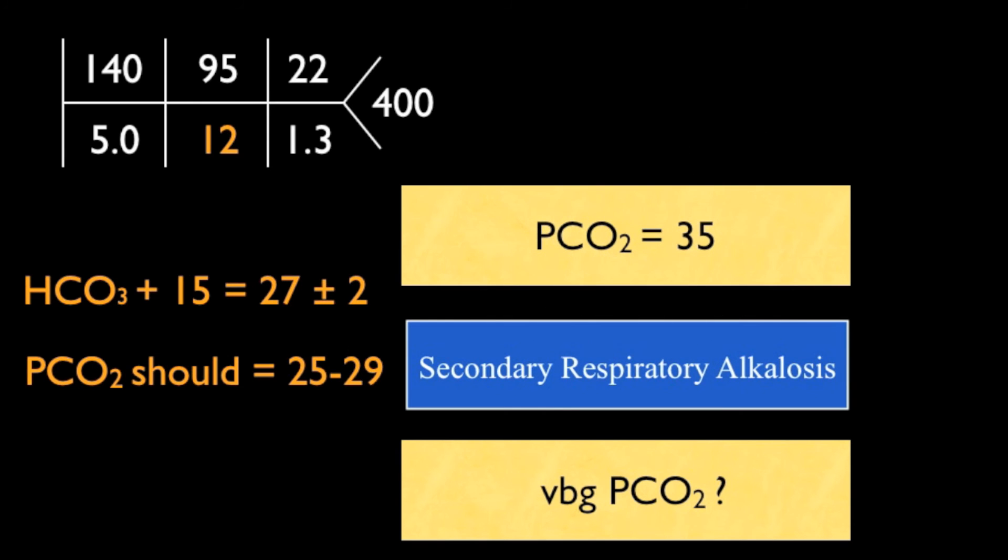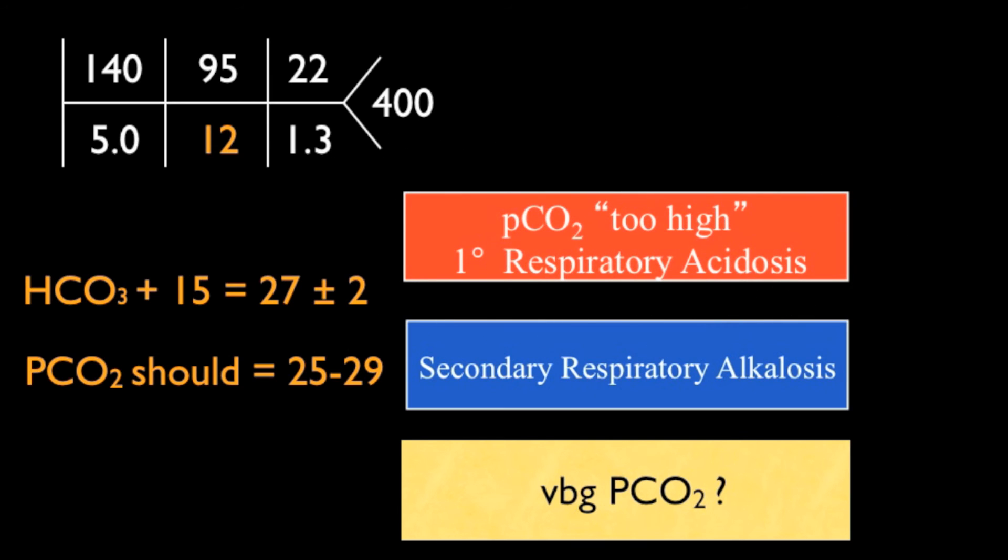A second patient with the PCO2 is 35 doesn't follow the rule. It's too high. This must be another process, a primary respiratory acidosis superimposed.